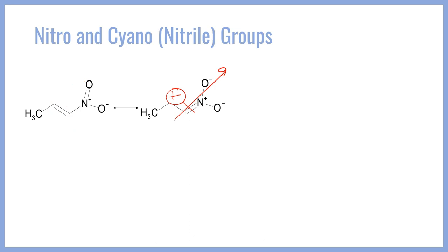So in the overall molecule, this carbon is going to carry a partial positive charge. Just like the carbonyl group, the nitro group can also stabilize an anion. For example, consider this ortho nitro phenoxide anion — the nitro group adjacent to this O- can help delocalize the anion charge and stabilize it.